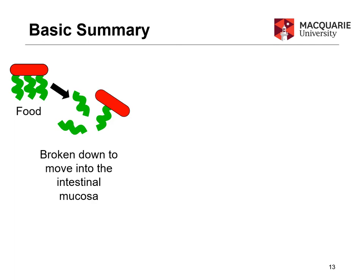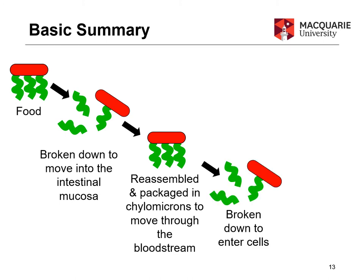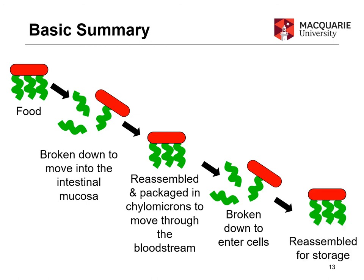A general summary: you take in food as triacylglycerides, break them down into fatty acids and a monoacylglyceride to cross the intestinal mucosa, then repackage them into triacylglycerides inside chylomicrons to move through the bloodstream. Lipase then breaks the chylomicrons down again to deliver energy to cells. If energy isn't needed immediately, the remainder is reassembled into triacylglycerides and stored in adipose tissue.